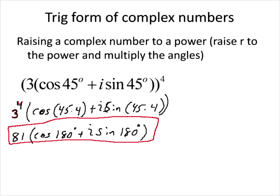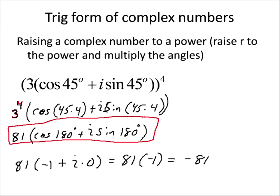If we want to write that out in complex number form, we take 81 times the cosine of 180 degrees — but the cosine of 180 degrees is negative 1, and the sine of 180 degrees is 0. So we have 81 times negative 1 plus i times 0, which is just negative 81. That's the answer they're looking for in the homework. Remember the rules in plain English — multiply R's and add angles for multiplication, divide and subtract for division, raise R to the power and multiply angles for powers — and it will be easier than memorizing the formulas.